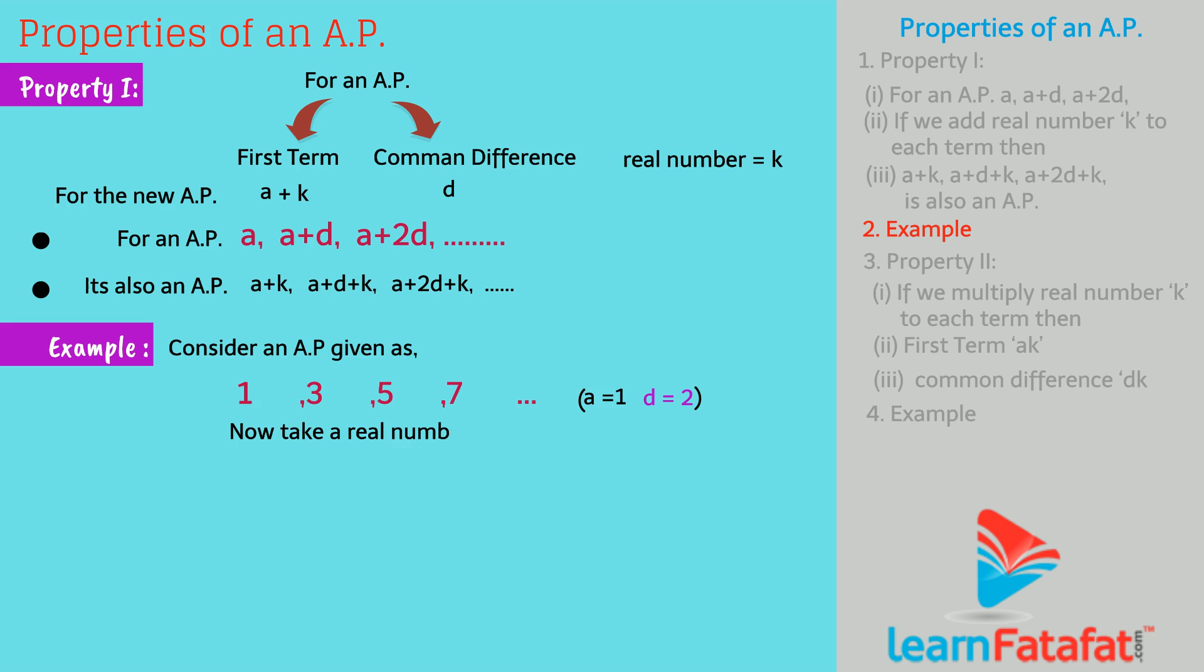Let us now take a real number 3 and add it to each term of the AP. Then the new AP becomes 1 plus 3, 3 plus 3, 5 plus 3, 7 plus 3. That is 4, 6, 8, 10.